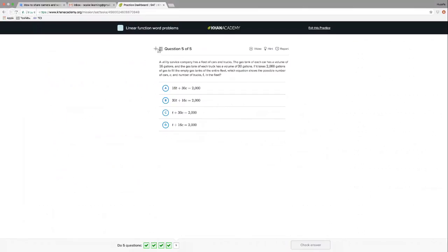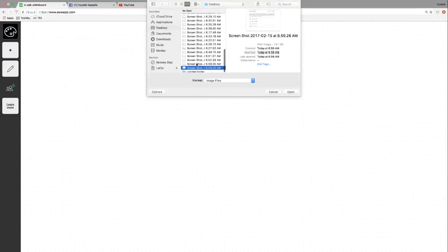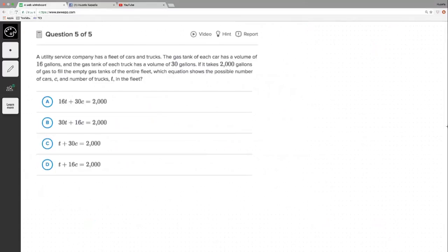Last one, which I'm excited about because my voice is hurting. Last problem. A utility service company has a fleet of cars and trucks. The gas tank of each car has a volume of 16 gallons, gas tank of each truck has a volume of 30. Takes 2,000 gallons of gas to fill the empty gas of the entire fleet, 2,000.